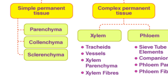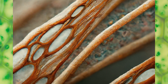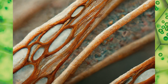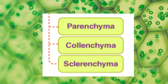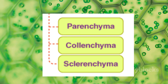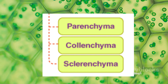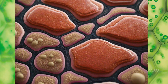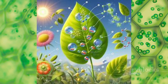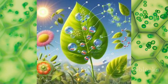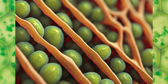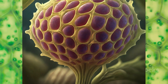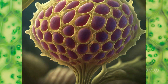Simple permanent tissues are homogeneous and composed of similar types of cells. These include parenchyma, colenchyma and sclerenchyma. Parenchyma cells are the most common and are involved in functions such as storage, photosynthesis and helping the plant float on water. Colenchyma cells provide flexibility and support to the plant, allowing it to bend without breaking.